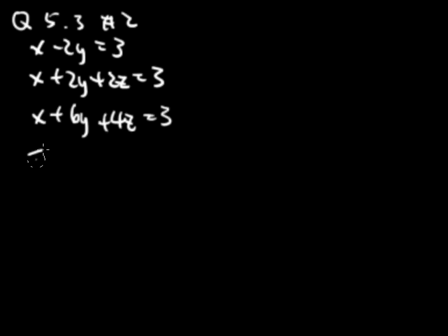So first, I'll write this in the augmented matrix form. Here we have 1, negative 2, and because we don't have a z here, z is 0. Then 3, 1, 2, 2, 3, and 1, 6, 4, 3.